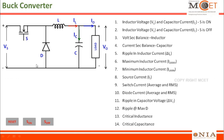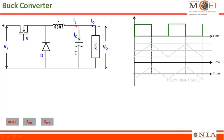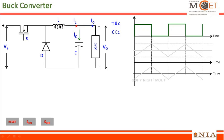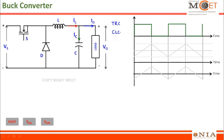Generally, a buck converter will operate in two modes. One is when the switch S is in ON condition and the other one is when the switch S is in OFF condition. As mentioned in the video lecture on control strategies of chopper, there are two methods of controlling the chopper: time ratio control and current limit control. In current limit control, the inductor current is maintained between some minimum and maximum value — it turns ON when below the maximum and turns OFF when above it.